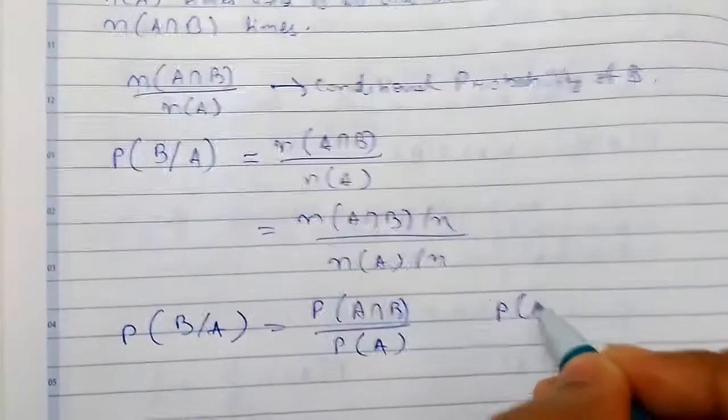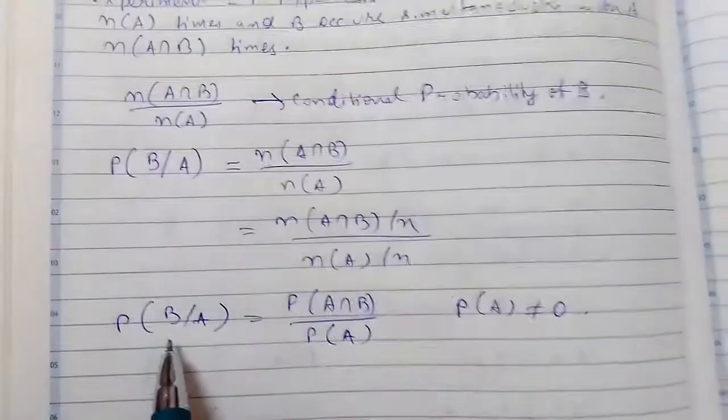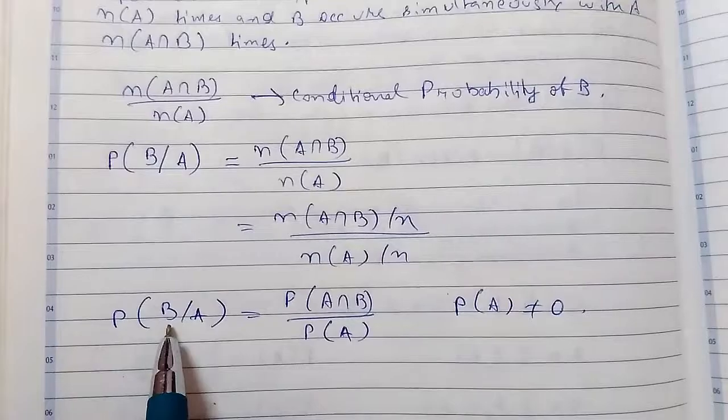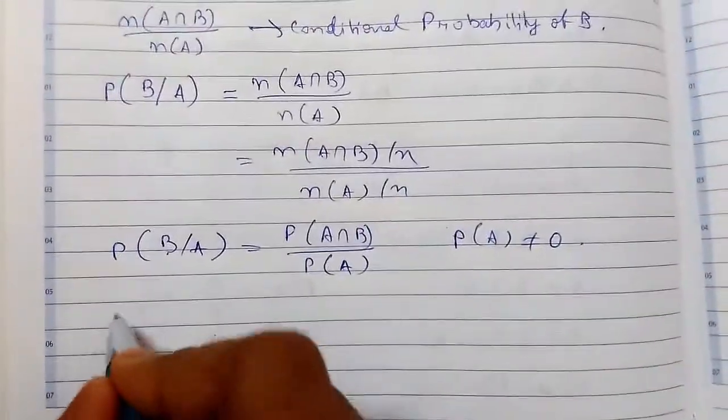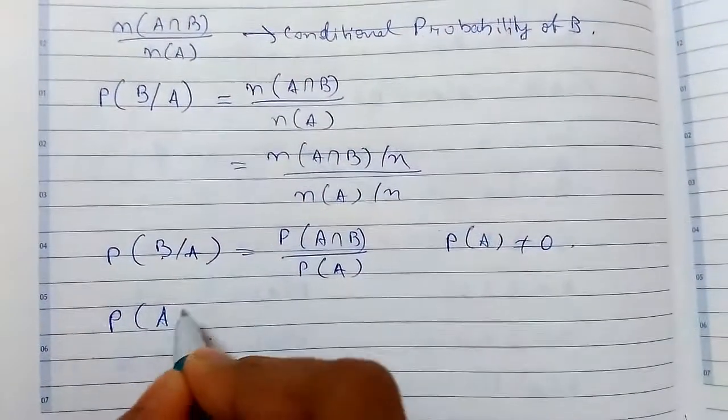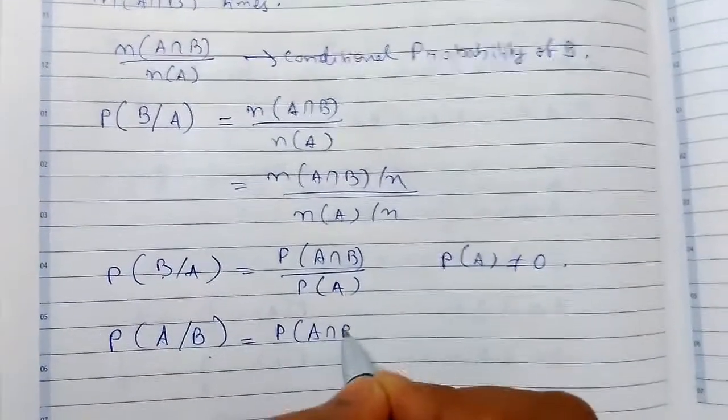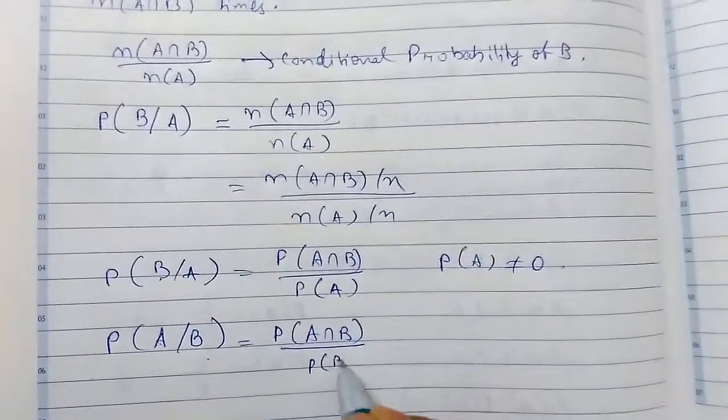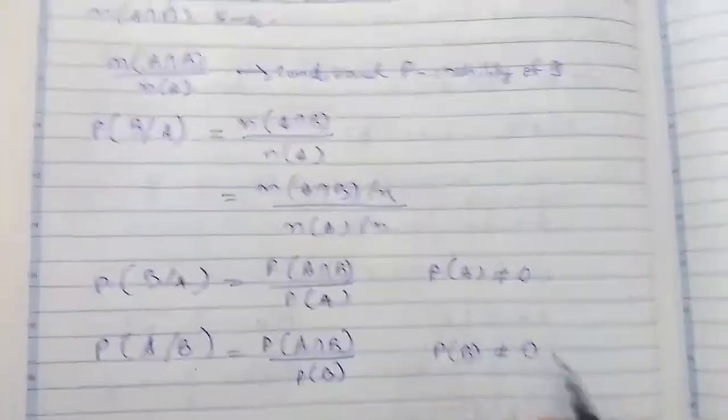Provided that probability of A must not be equal to zero. This is the conditional probability of B on the hypothesis that A has occurred. Similarly, the conditional probability of A on the hypothesis B has occurred will be P(A intersection B) upon P(B), provided that probability of B is not equal to zero.